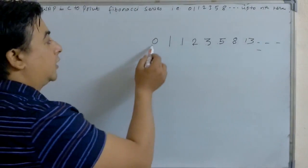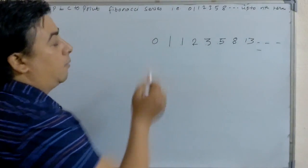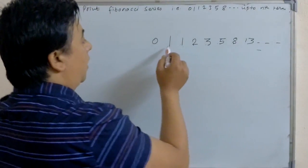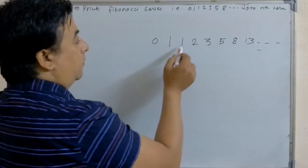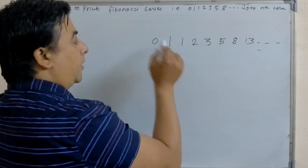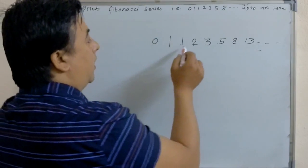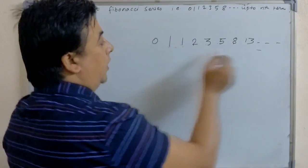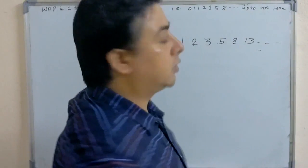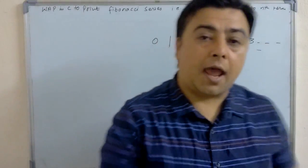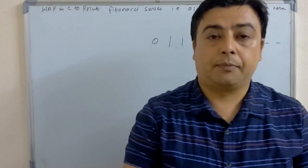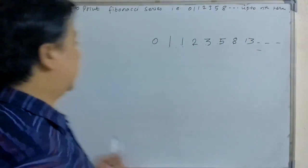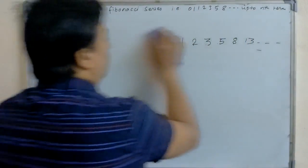So the first number and second number become the third number. Again, the second number becomes the first number and the third number becomes the second number, and first and second become third. In this way, it continues up to the nth term. This is known as the Fibonacci series.